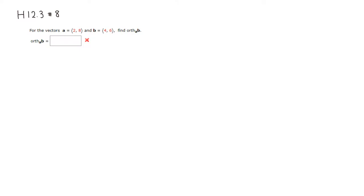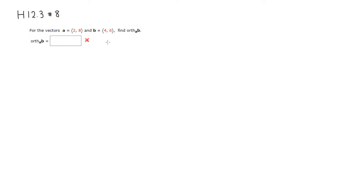Before we find the orthogonal projection, I'm going to go ahead and find the vector projection. The projection of vector B onto vector A is simply A dot B divided by the magnitude of A — that gives you the scalar projection — then multiply by the unit vector with the same direction as vector A.